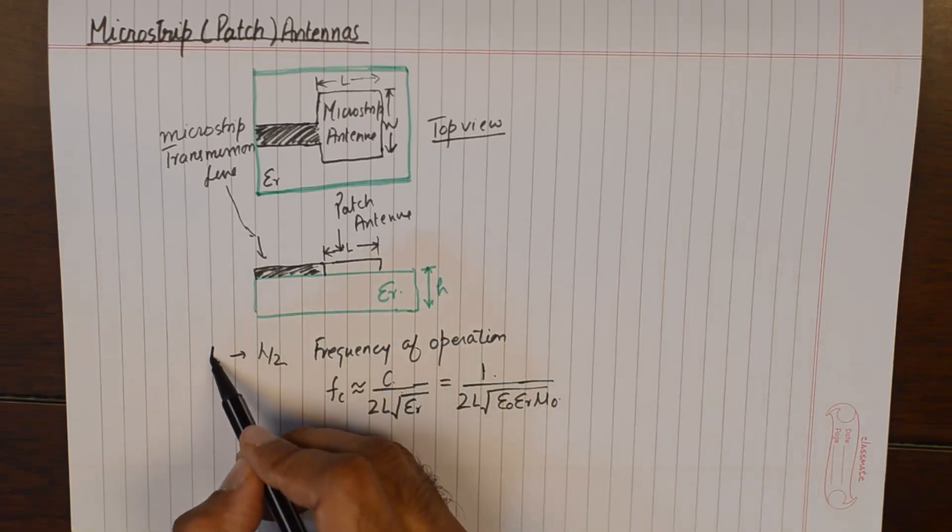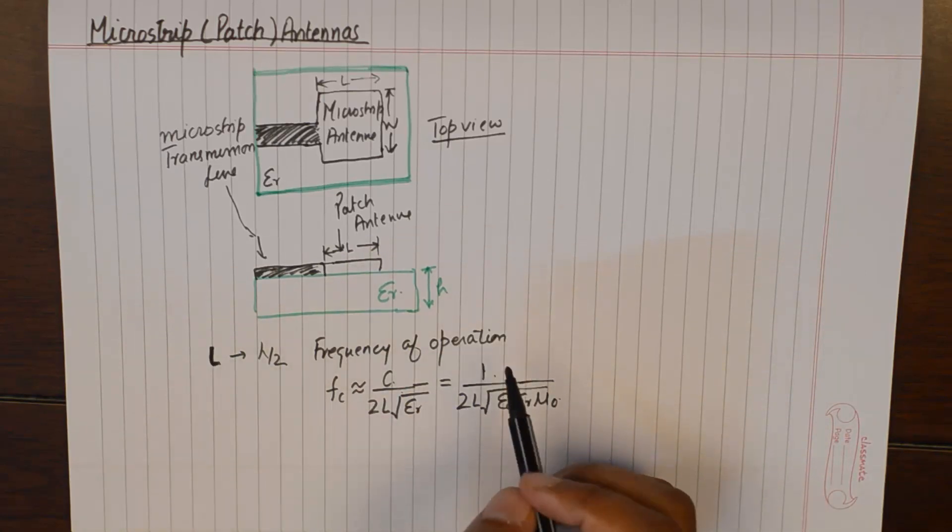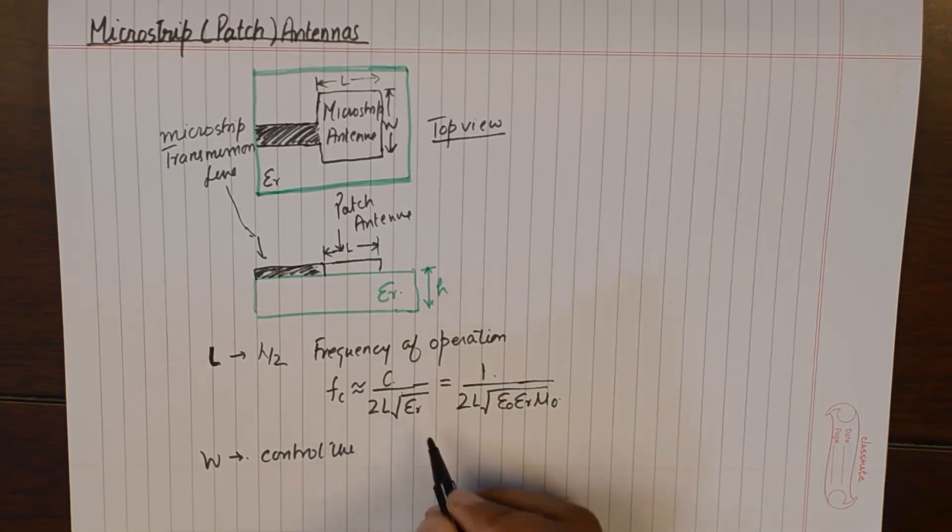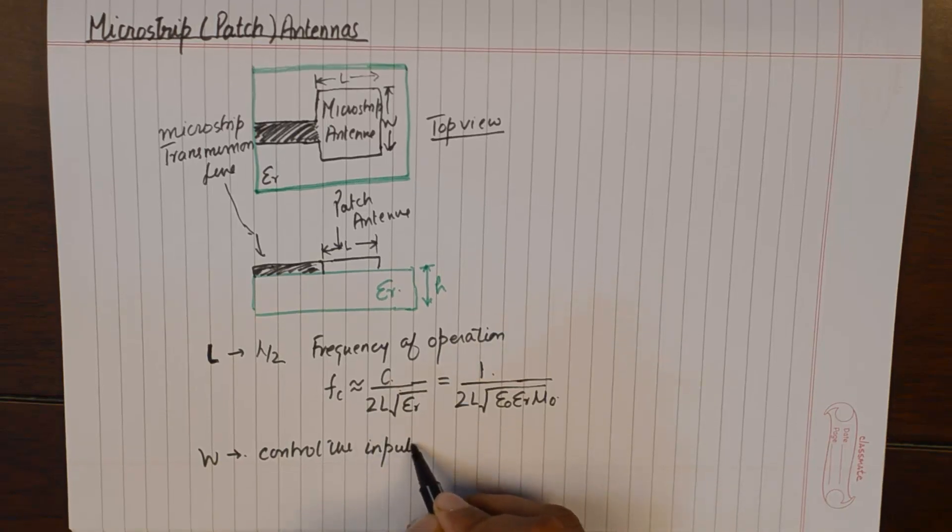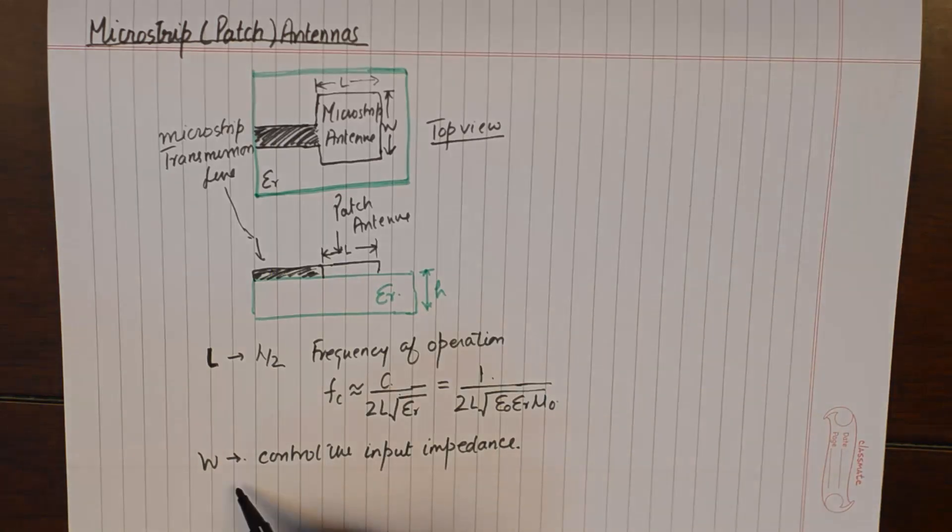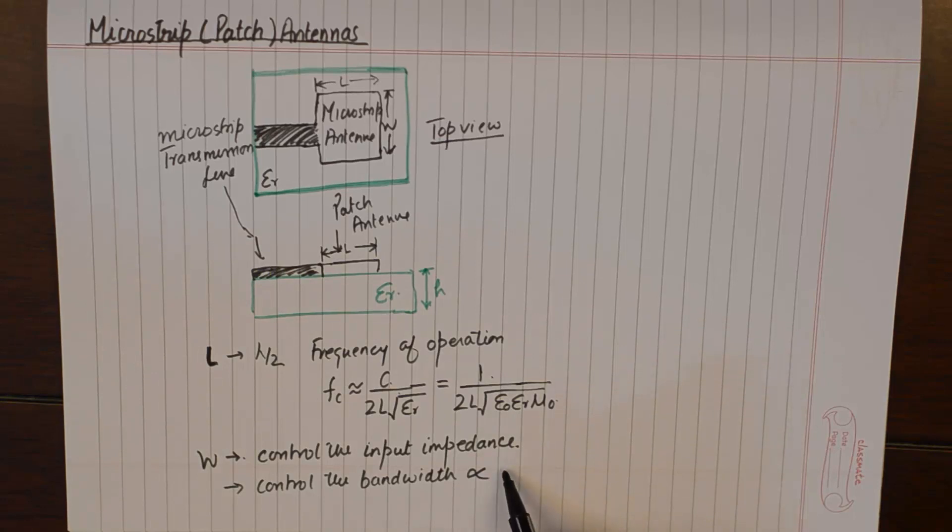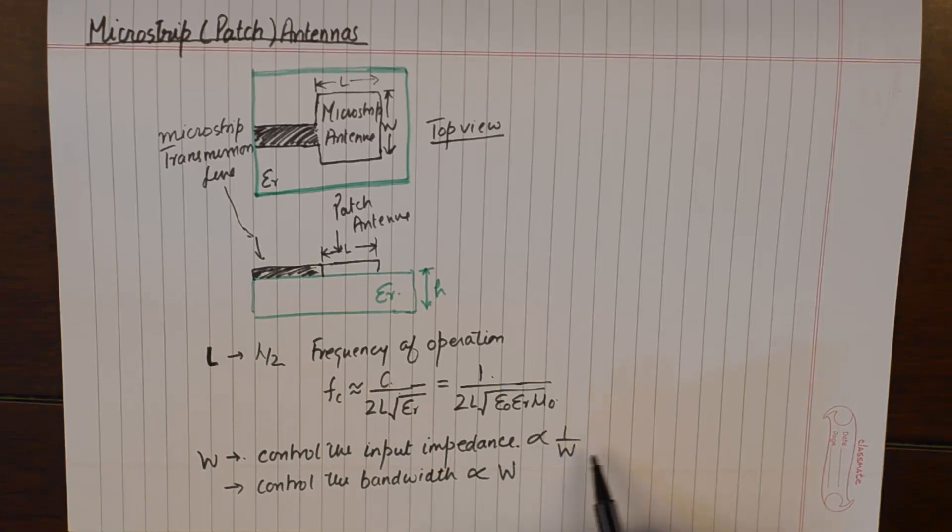It is advisable that in this equation the length should be equivalent to half of the wavelength within the dielectric substrate medium. L is the quantity that directly affects the frequency of operation and W would control the input impedance and the bandwidth.